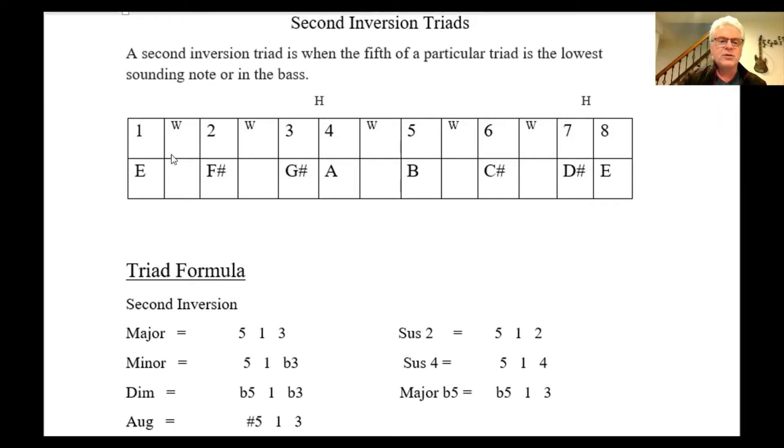In an E major scale, we start with our E, we go a whole step to F sharp, another whole step to G sharp, a half step to A, whole step to B, whole step to C sharp, a whole step to D sharp, and another half step to E.